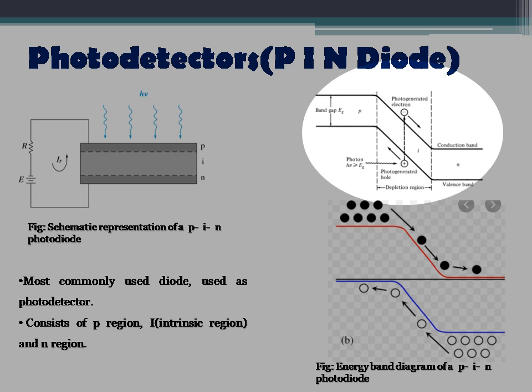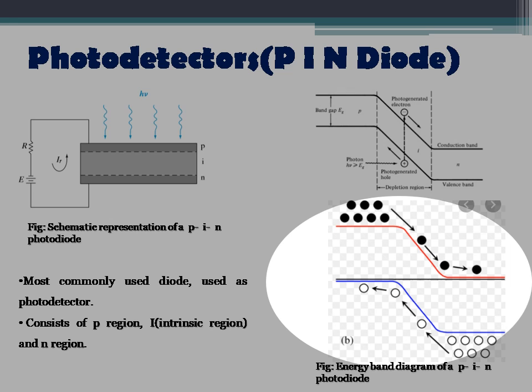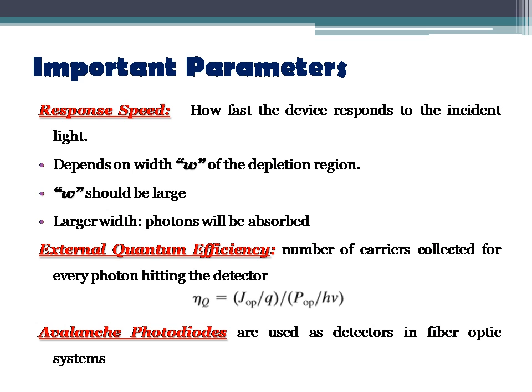Similarly, when light is incident on the N side, electron-hole pairs are generated, and the holes diffuse through the I region and are drifted toward the P side. Now let us talk about some important parameters of the PIN diode or photo detector.